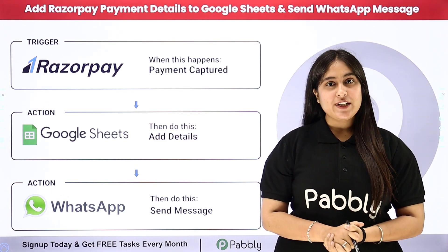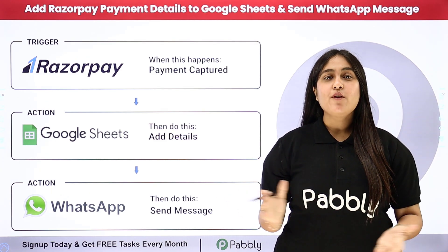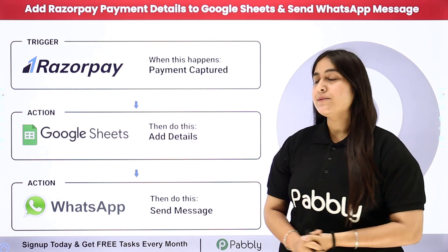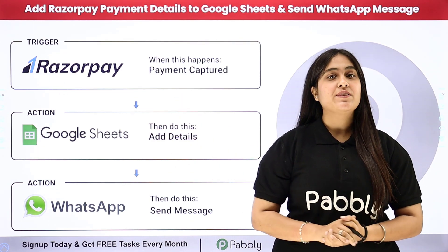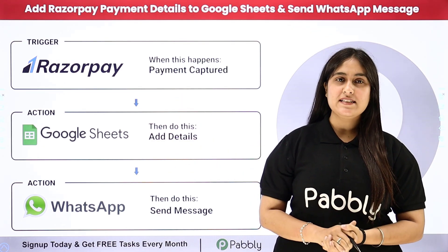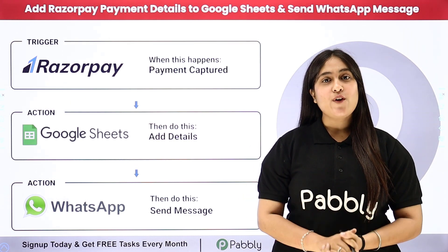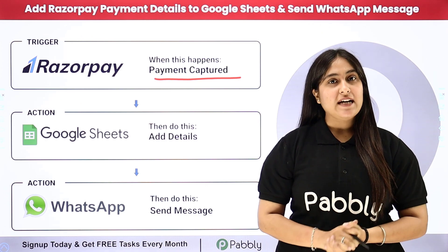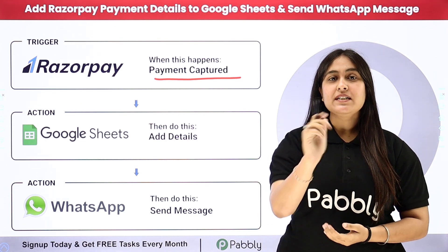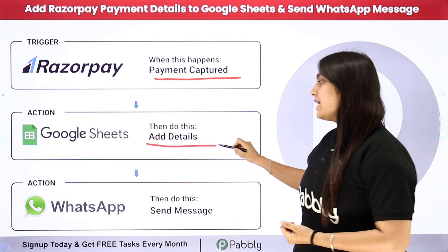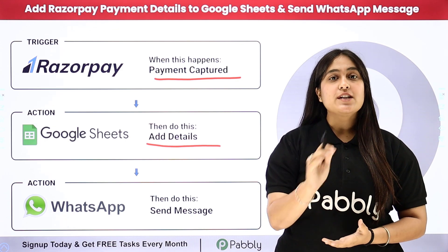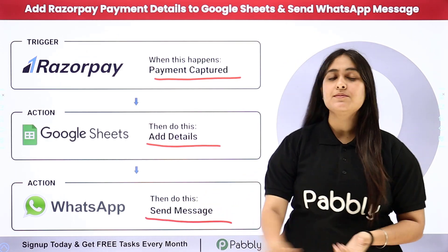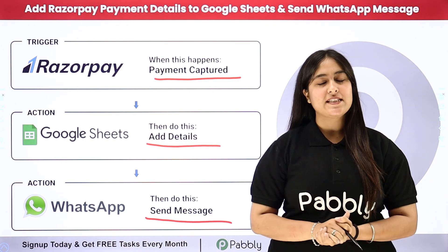I am a digital marketing trainer offering different sessions and using Razorpay as my payment gateway. Whenever I receive a new payment through Razorpay, I want that payment detail to be automatically added in my Google Sheets as a new row, and after that a payment confirmation message should be sent to my customers on their WhatsApp numbers.